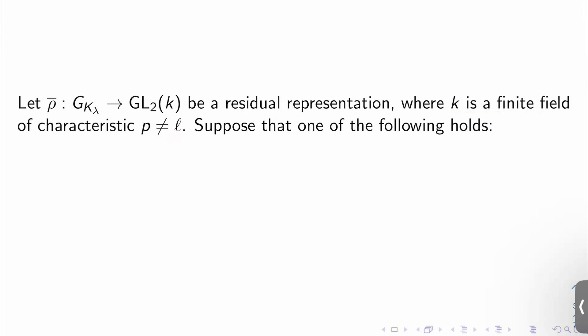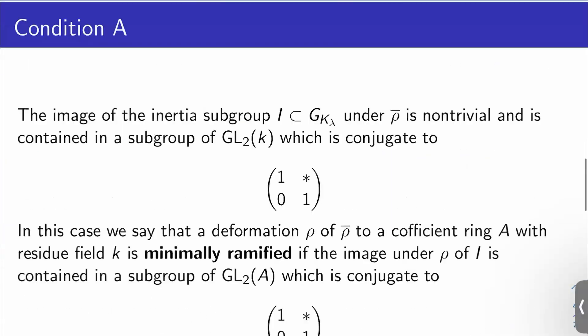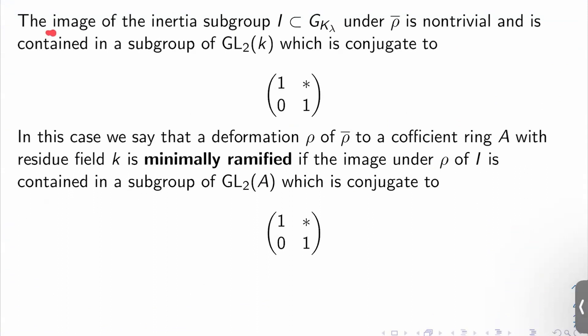We're going to suppose that one of the two following minimal ramification conditions hold. The first condition will be called condition A, and it will say that the image of the inertia subgroup I in G_K_lambda under rho bar is non-trivial. And it's contained in the subgroup of GL_2 K, which is conjugate to basically unipotent matrices, one star zero one.